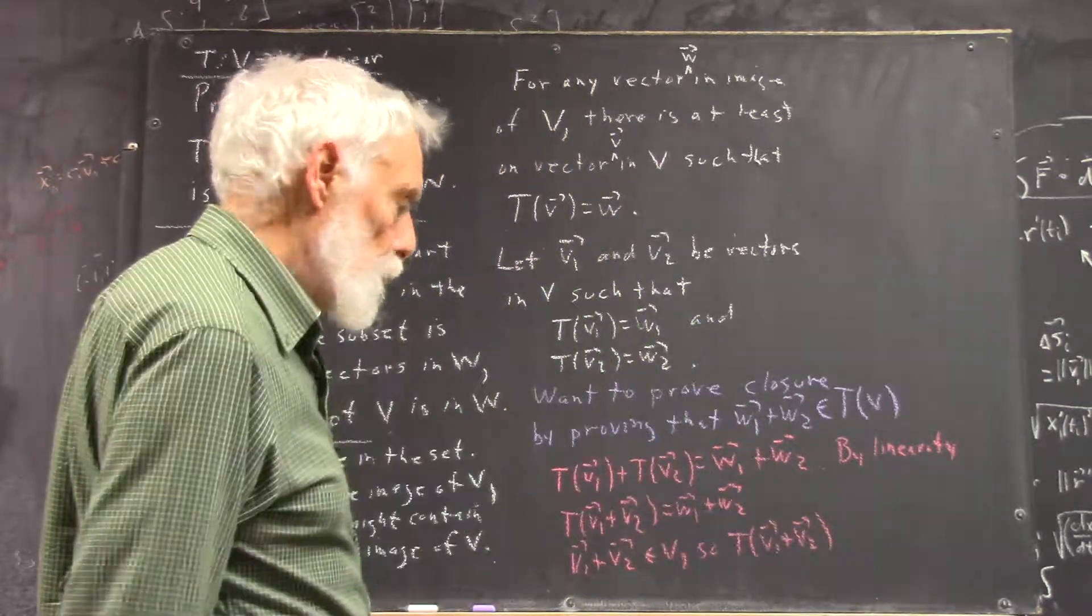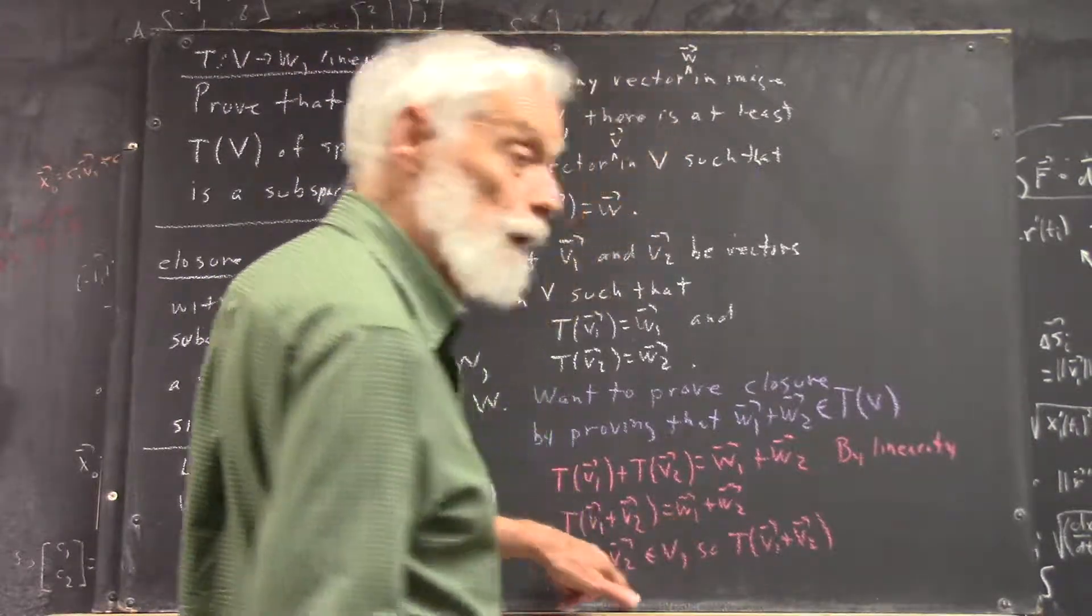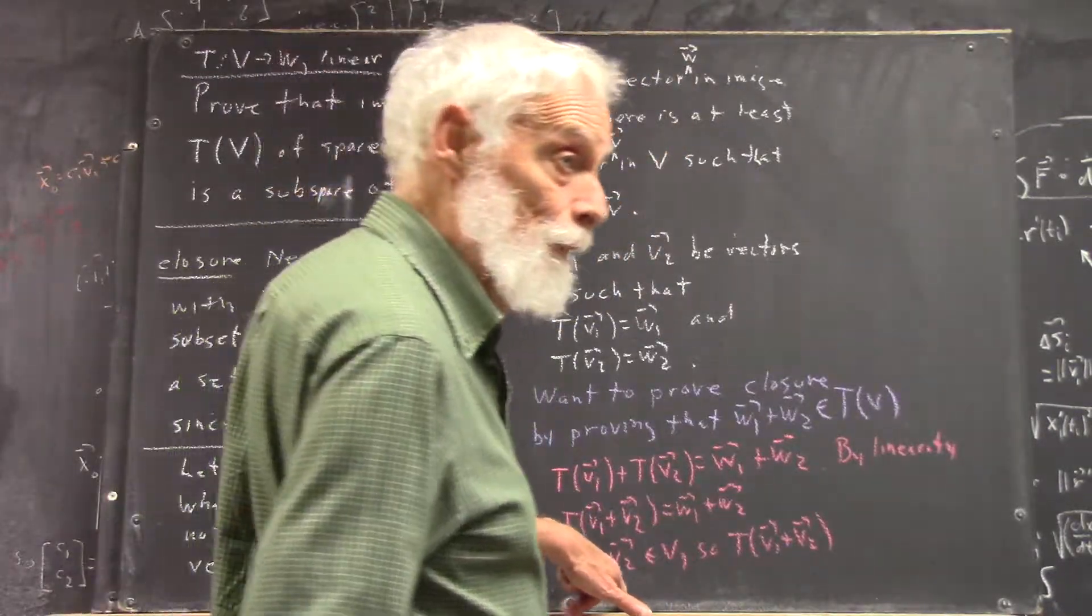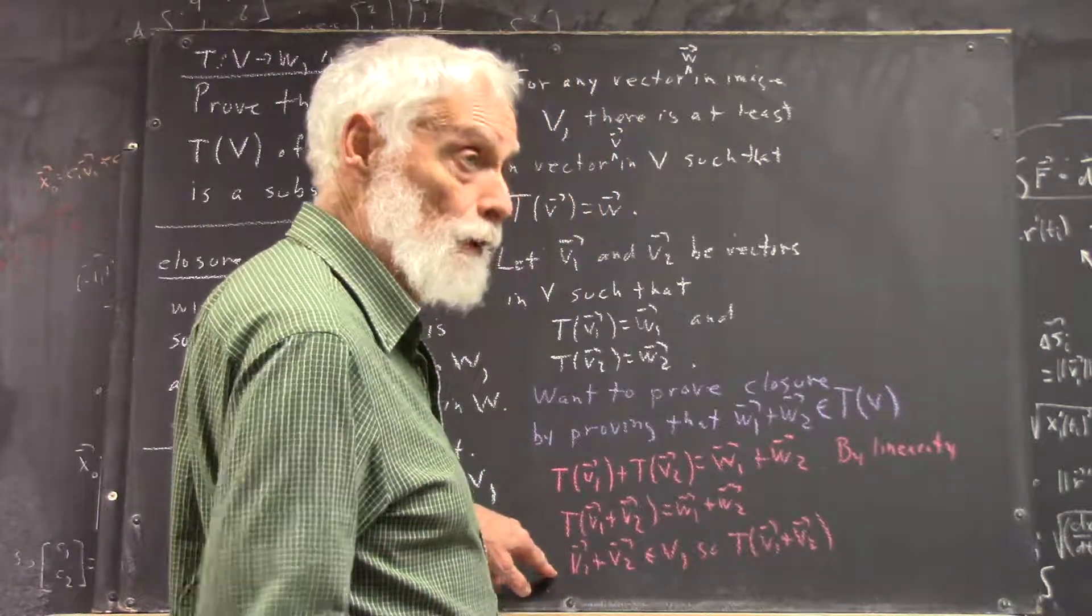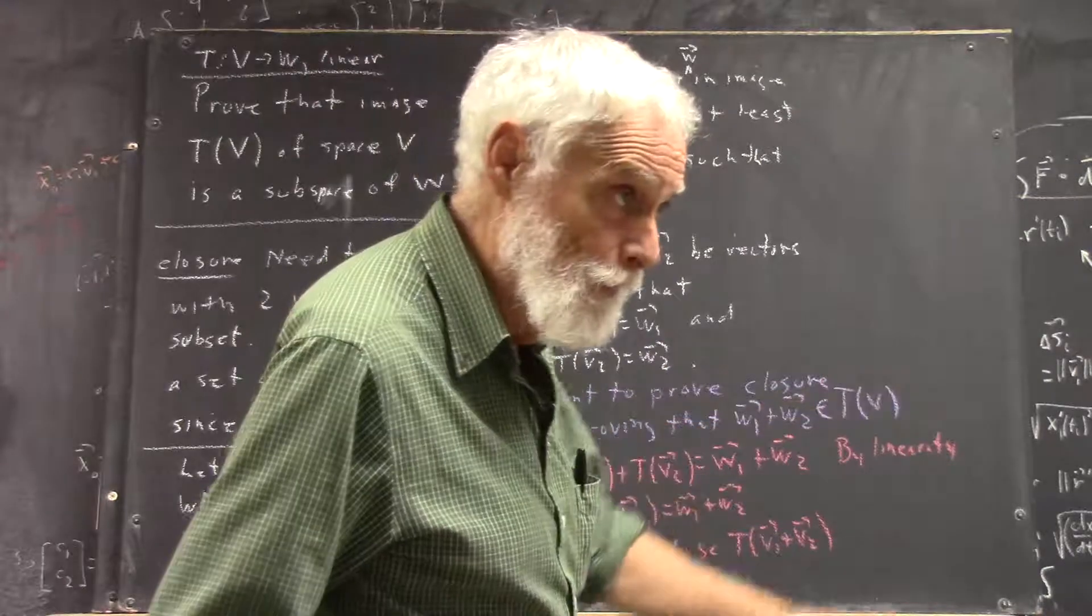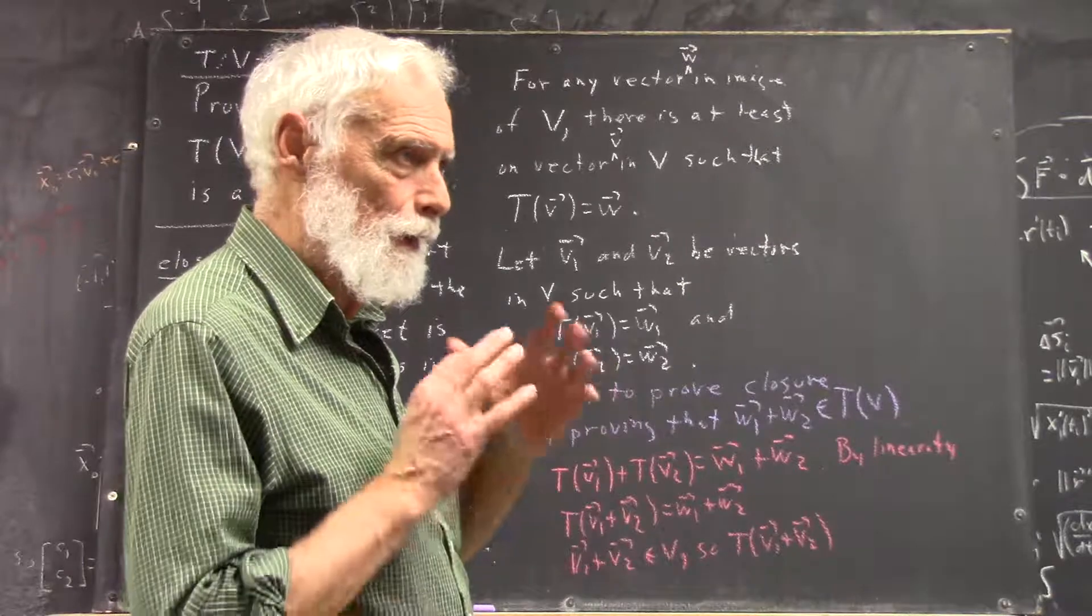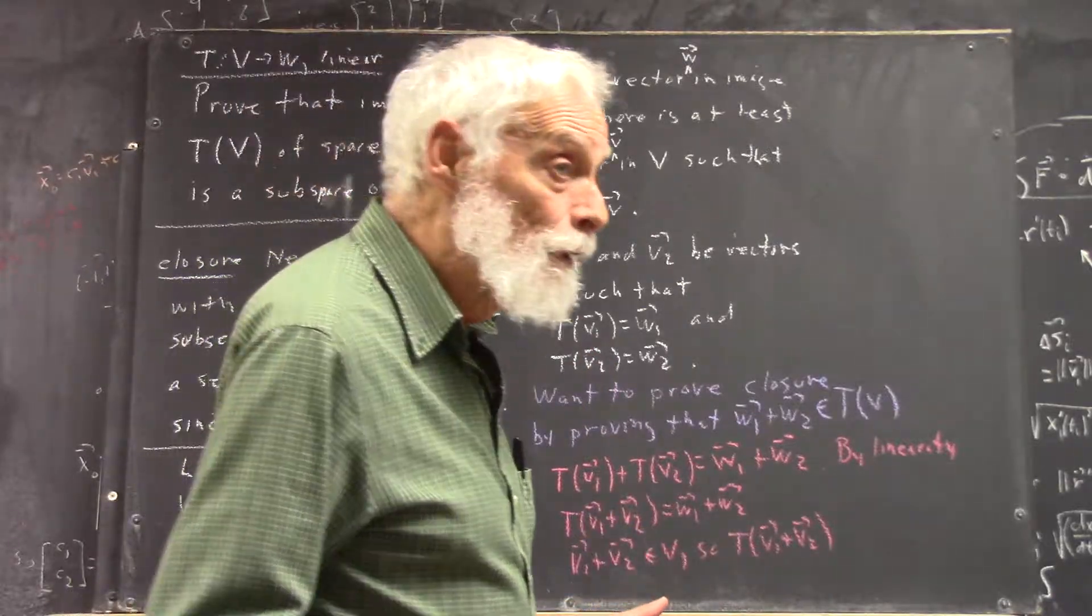V1 plus V2 is in the space V, clearly, because it's a vector space. It's closed under addition, right? And you probably want to say that by closure of V under addition, V1 plus V2 is in V. Might not be totally necessary in every circumstance, but right now you want to say everything. Okay?